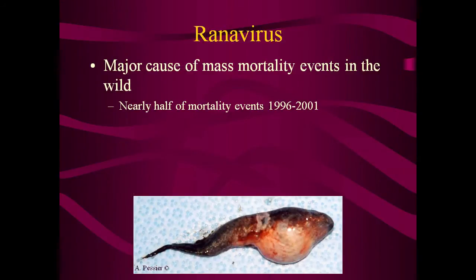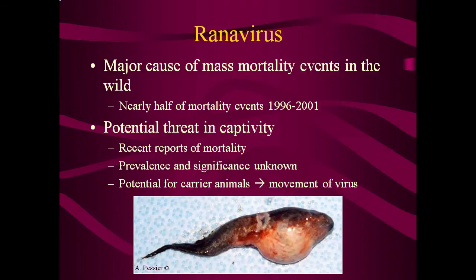We will now move on to talk about ranavirus. Raynaviruses have been documented to have caused mass mortalities of free-ranging amphibian populations. In one study, ranavirus was implicated in nearly half of all mortality events from 1996 to 2001. These viruses have also been reported to have caused mortality events in captive collections. The role of ranavirus in captive collections is relatively newly recognized, and so there are many questions still about its prevalence and significance to different collections. However, given the reported outbreaks and the potential for non-affected carrier animals, the virus merits close attention.